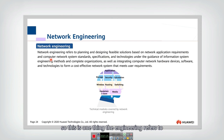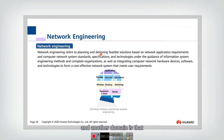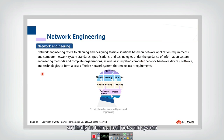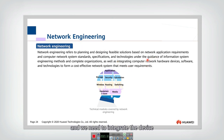Another domain of network engineering is implementation. When we design a solution, we need to integrate and implement the network — integrating computer network hardware devices, software, and topologies to finally form a real network system that meets the requirements. So there are two things: we need to design, and we need to integrate devices to implement the network.